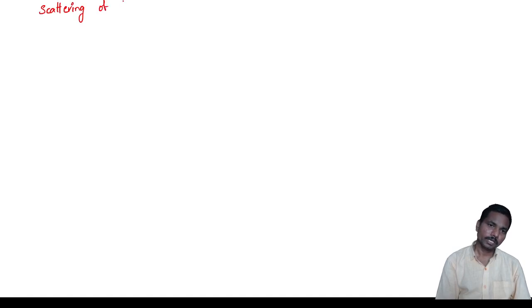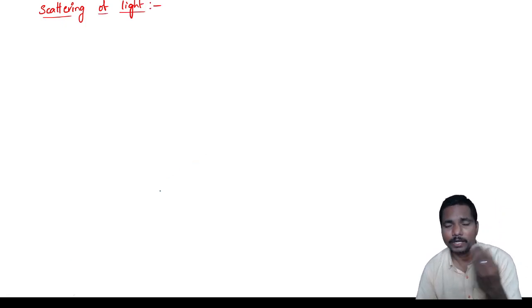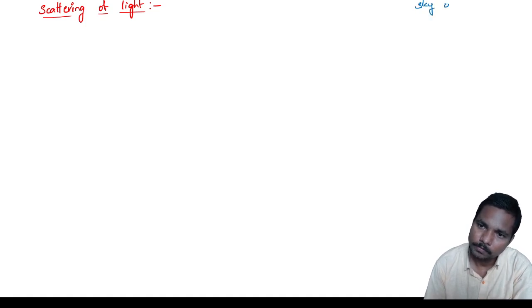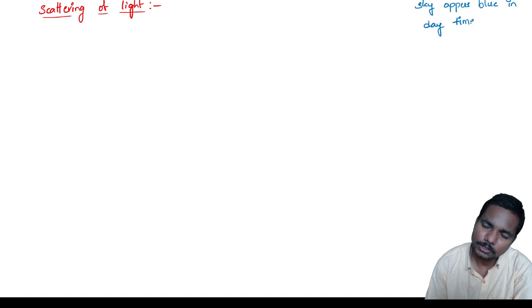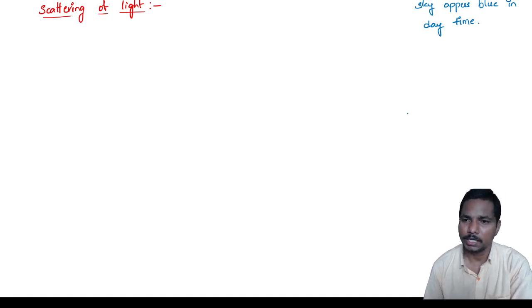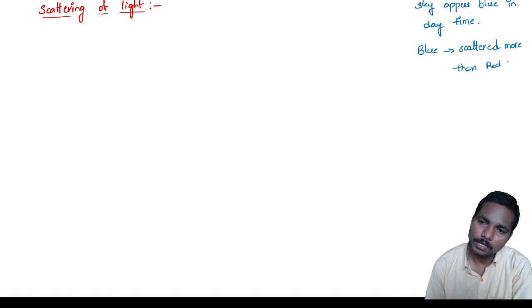In scattering of light, there is one important question: why does the sky appear as blue color? In daytime the sky appears blue. In nighttime it does not appear blue. This is because in VIBGYOR colors, blue is scattered more than red and other colors.